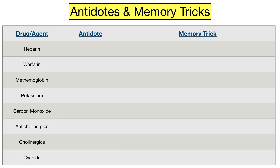Let's move on to the next group of antidotes. First we have heparin, which is a blood thinner. Hit pause in the video and try to guess the antidote for heparin. It's protamine sulfate. The trick to remember this is to think of protamine and proton — the symbol for a proton is H, which will help you remember heparin.